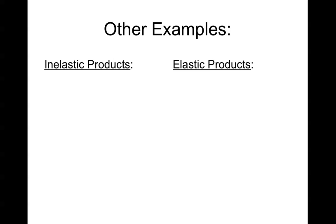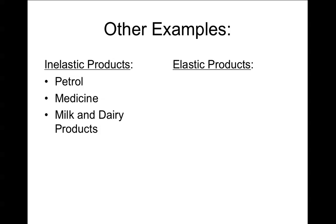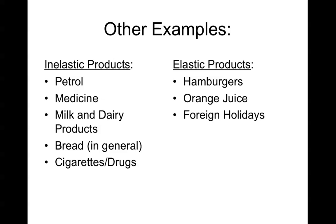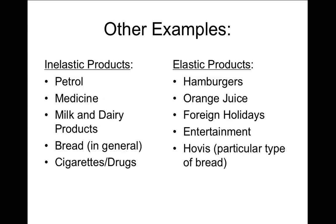Some examples to consider: inelastic products include petrol, medicine, milk and dairy products, bread in general, and cigarettes or drugs — they all share few substitutes and are things people need. Elastic products include hamburgers (if the price goes up, you might eat a hot dog instead), orange juice (grapefruit juice and apple juice are close substitutes), foreign holidays (not really necessary — you could have a domestic holiday), entertainment, and a particular type of bread — all products with many substitutes you could switch to if the price changed.